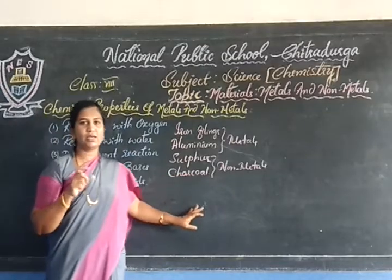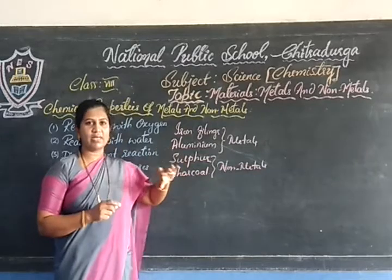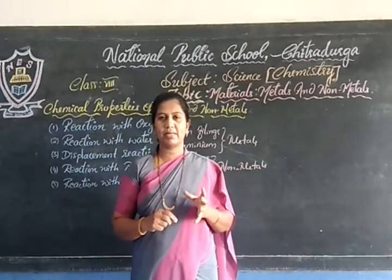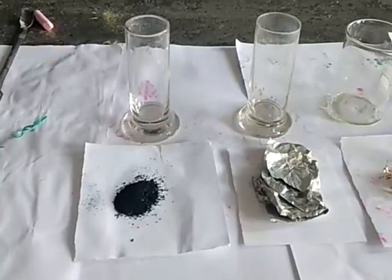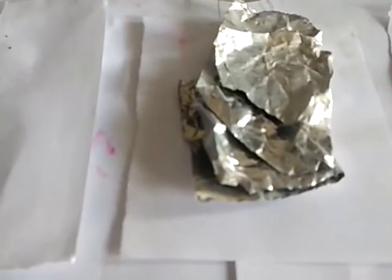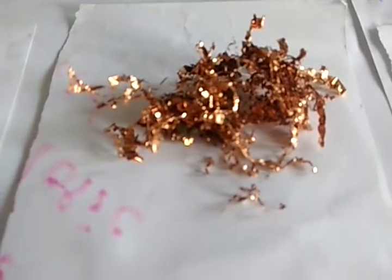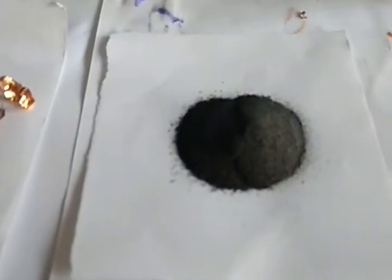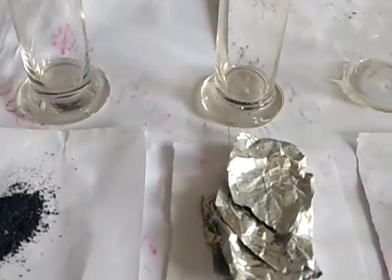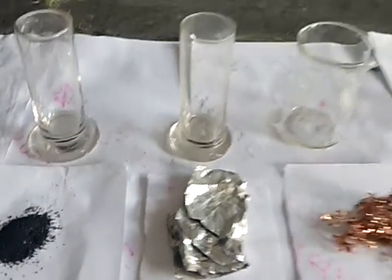Here we have taken the metal and non-metal samples, and you can record your observations. Now we shall do this experiment and see the reactions. This is the dilute sulphuric acid we have taken in the container. Now one by one, we shall put these samples into the beakers, then add the acid, and you can see and record the reactions.